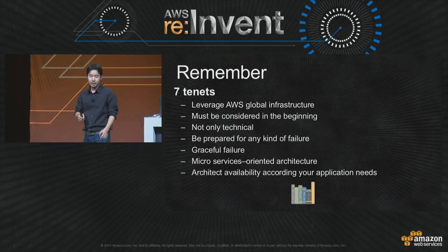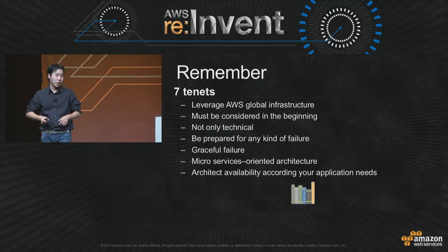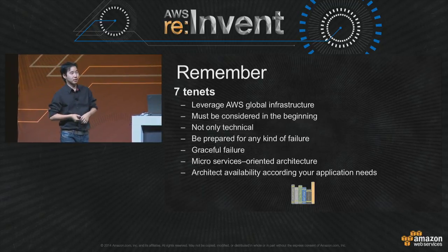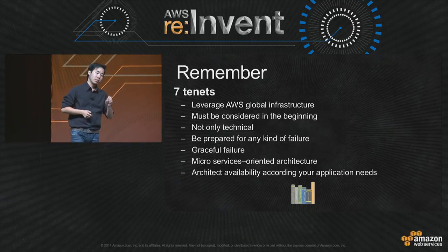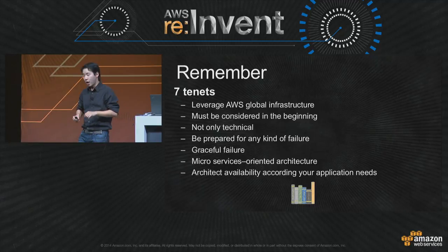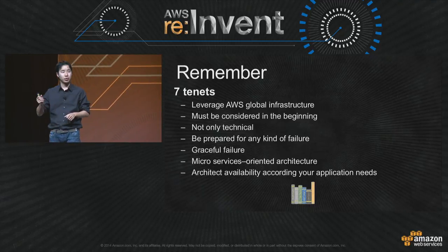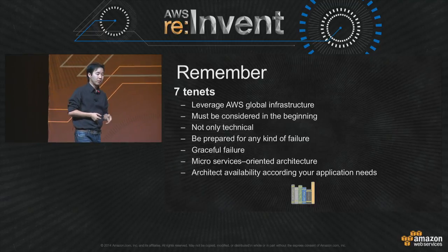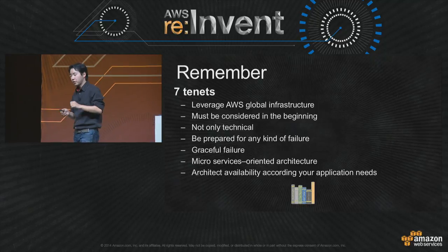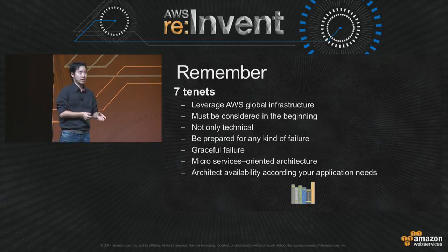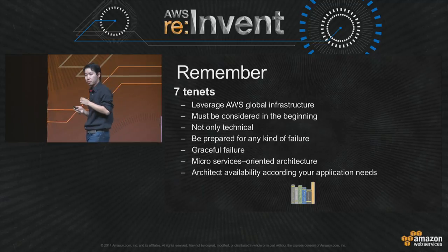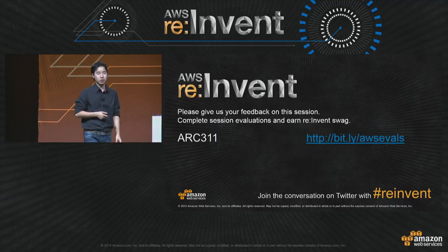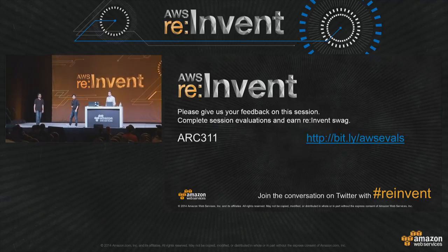To wrap up: the key message today is that you can achieve availability beyond the traditional high availability concept. Remember the basic tenets: leverage AWS global infrastructure; consider XA at the beginning of your process, not the end; remember it's not only a technical change; be prepared for every type of failure; think about graceful failure and implement a microservice-oriented architecture. And most importantly, architect your availability according to what your business needs — availability is just another component in your architecture. Think about the best way to achieve what your business really needs. Thank you.